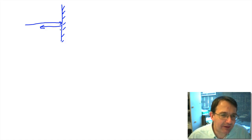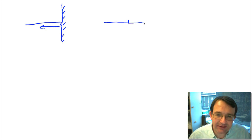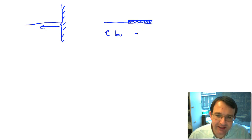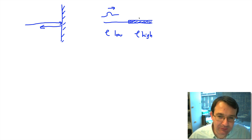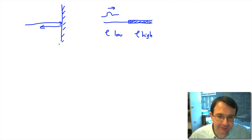This situation with light is almost exactly the same as if we consider a thin string connected to a large, heavier string — so here we have a low mass per unit length and here we have a high mass per unit length. If we send a wave pulse along this string, at the boundary some of the wave pulse will be reflected and some will carry on. That's exactly what happens with light hitting the surface of a glass block: some is transmitted and some is reflected.